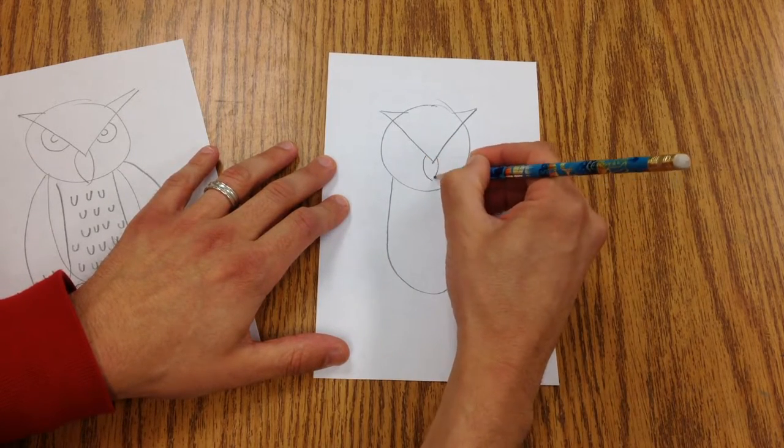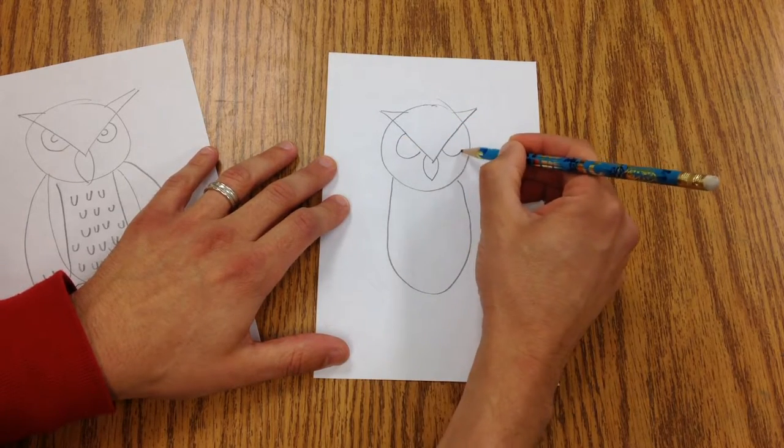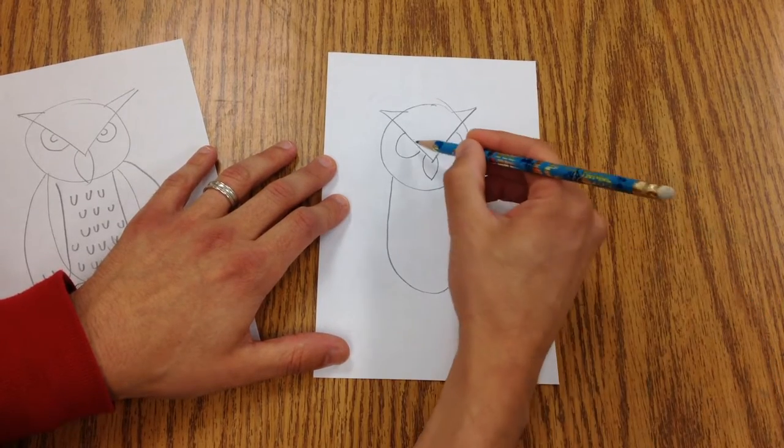We're going to make a beak by making these two curved lines like this, and we're going to make the eyes. I'm going to give them some pupils.